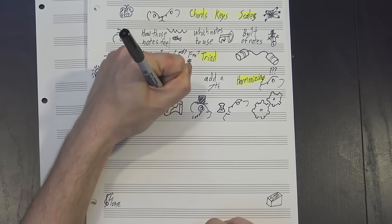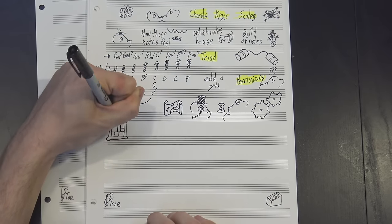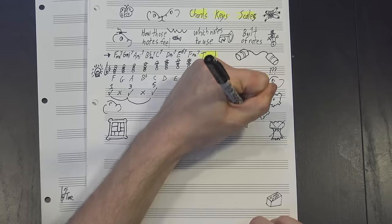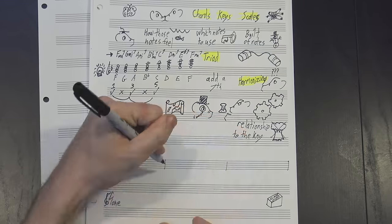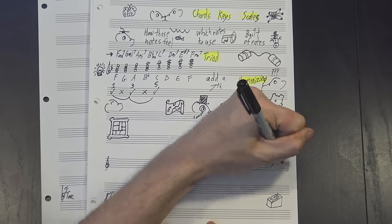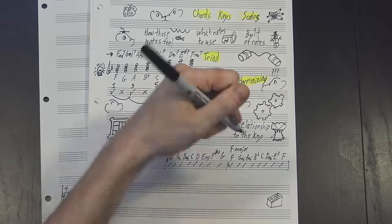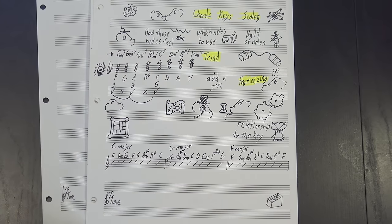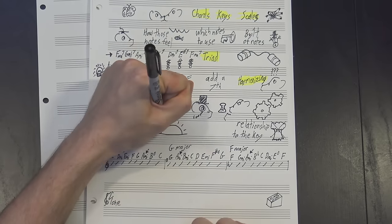Of course, no matter where you start your scale, you'll always get the same pattern of chords, and it's often useful to describe them not in terms of their actual roots but their relationship to the key. For instance, the keys of F major, G major, and C major all have A minor triads in them, but the way the chord feels is different in each one.